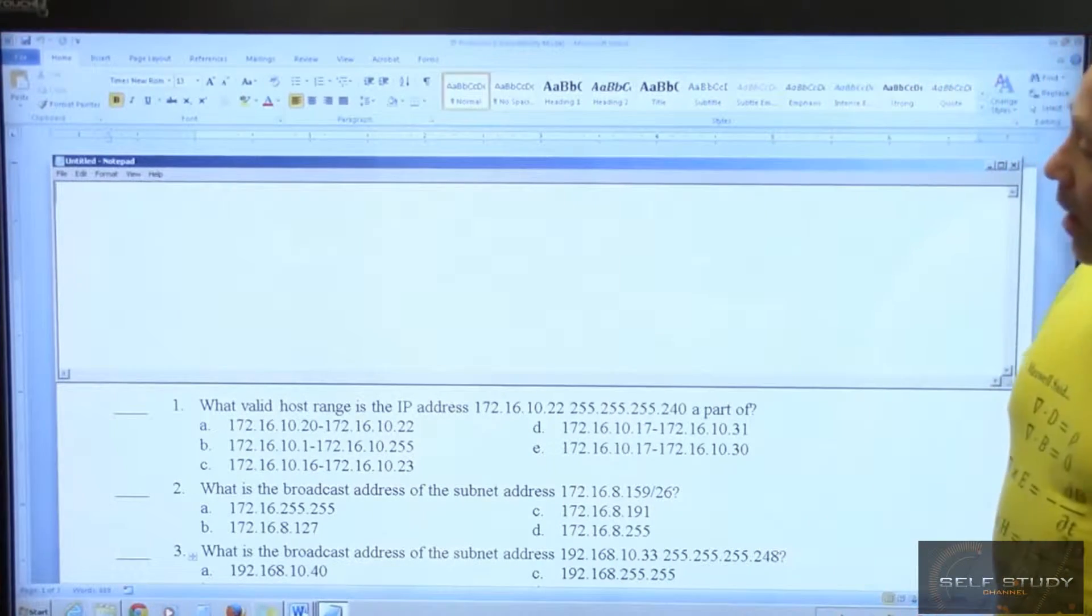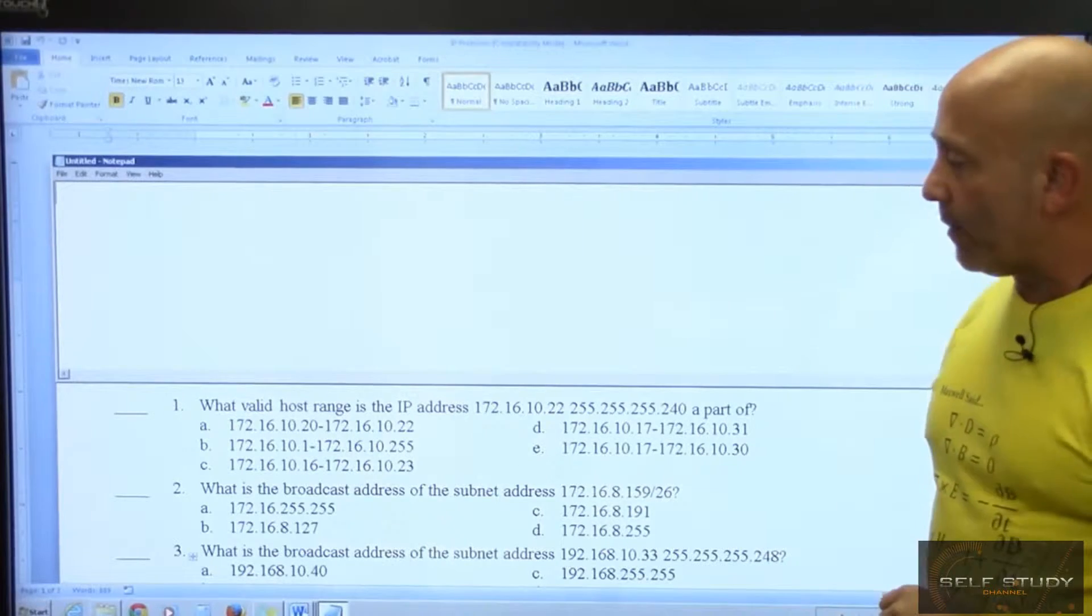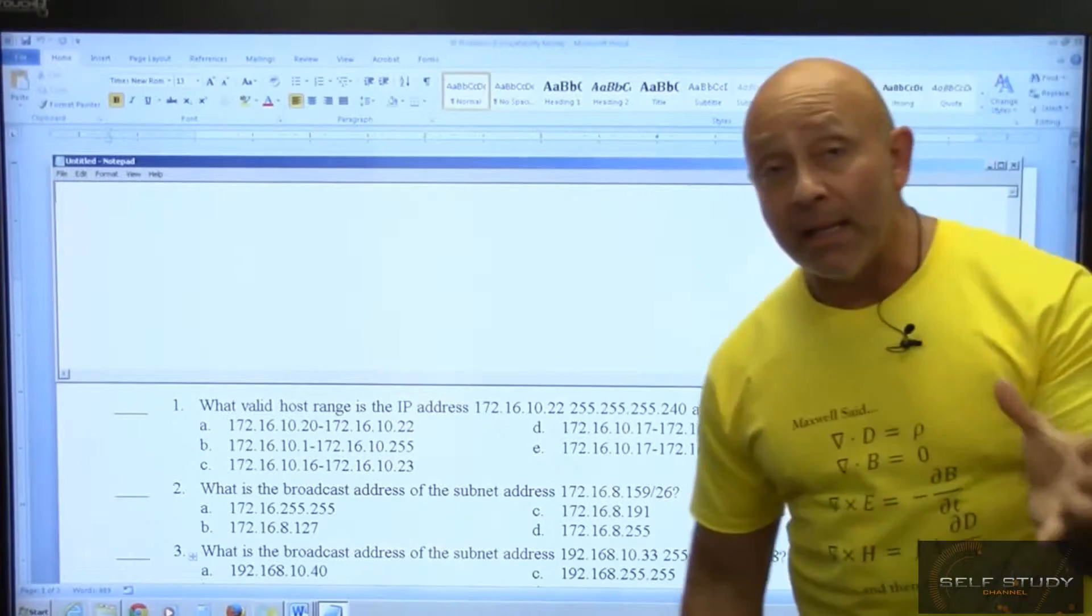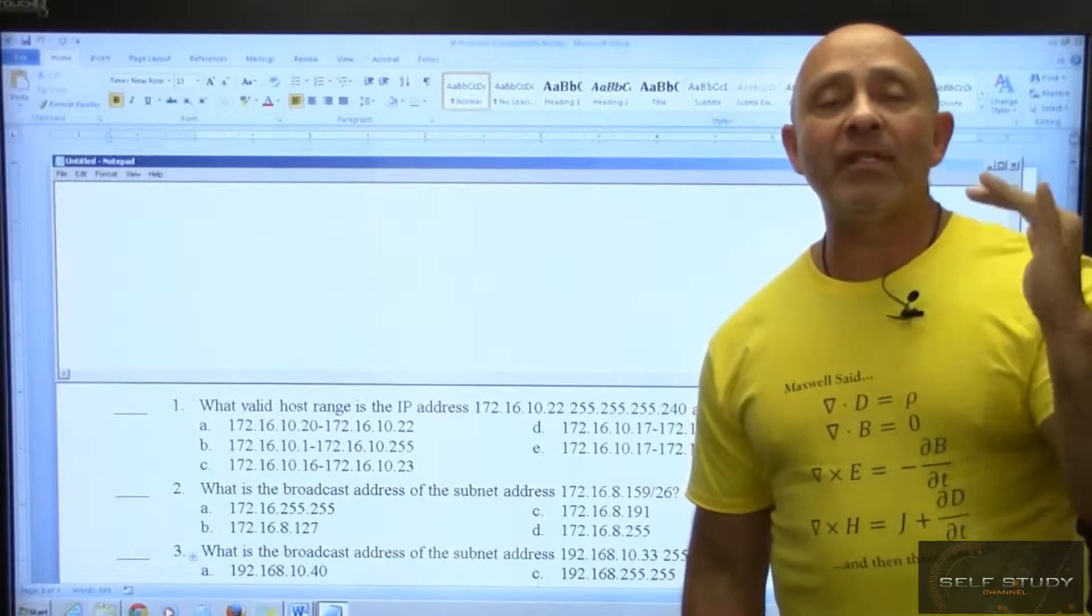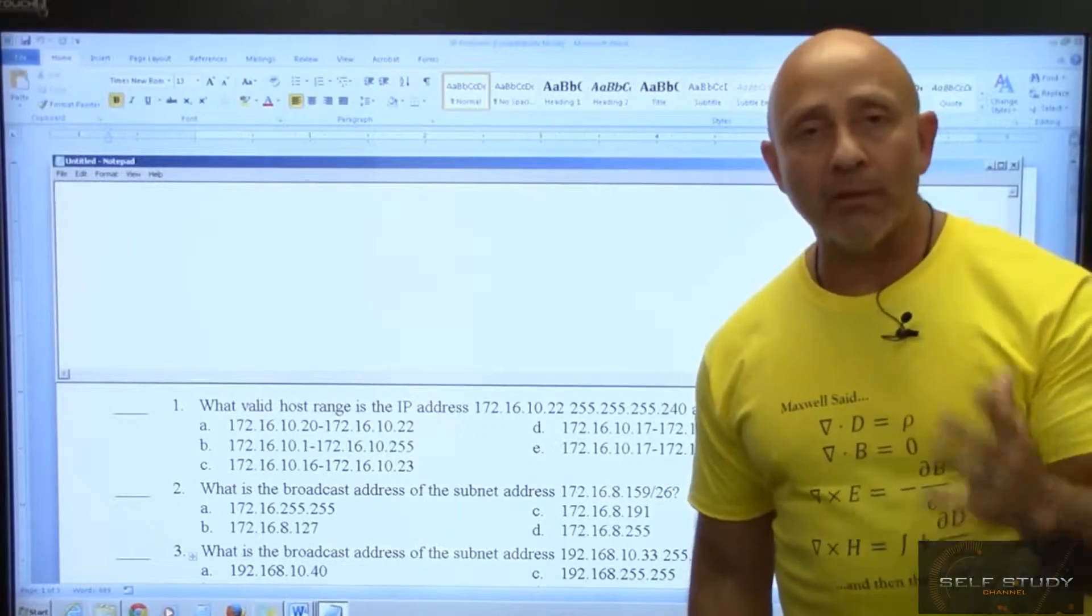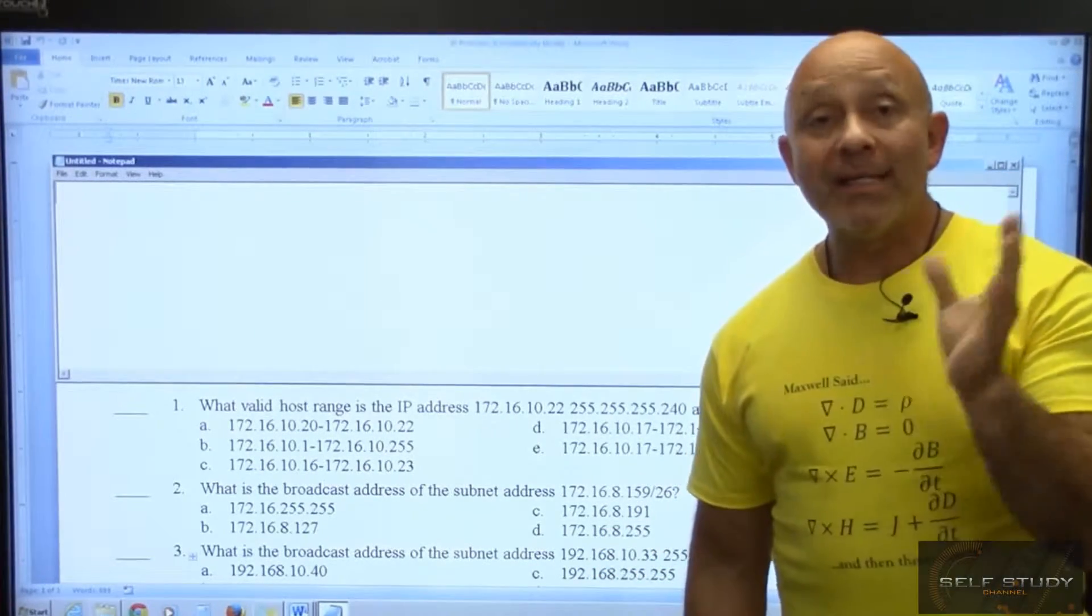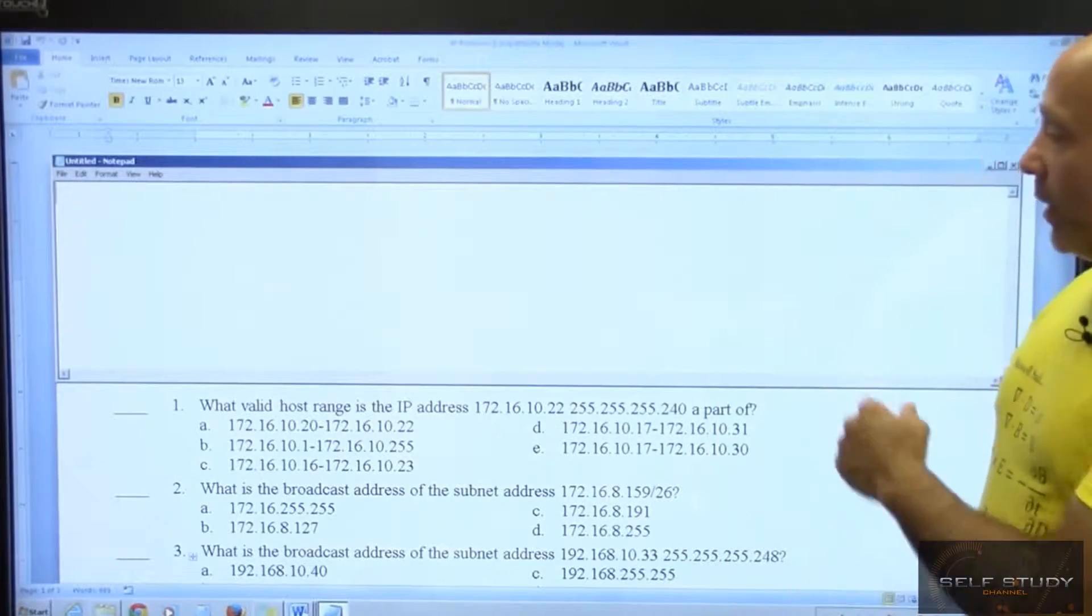So here we have the first question. We'll do a couple questions, not many, just for you to get the idea of what classful subnetting is, which usually means that you have the same number of hosts per network. That's classful subnetting - same number of hosts, same mask per network.